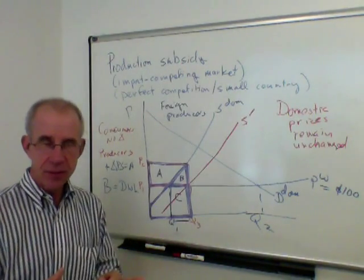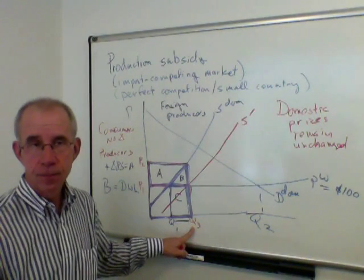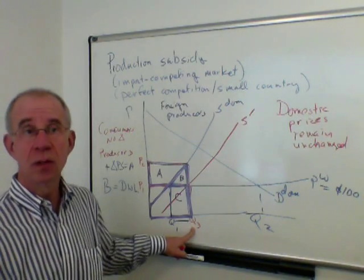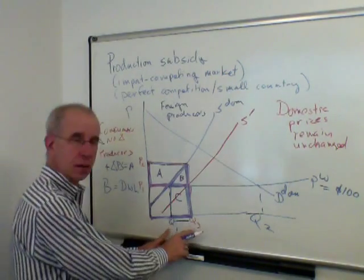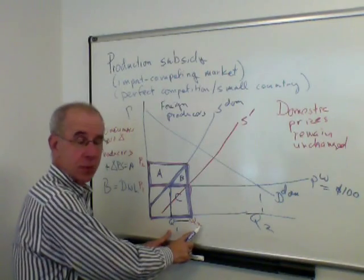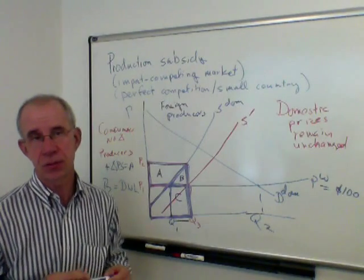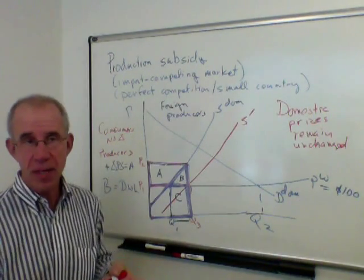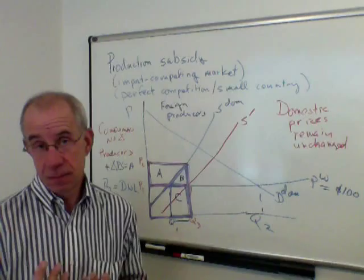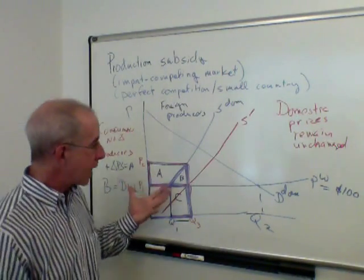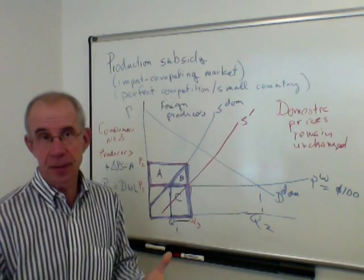Let me summarize: a domestic production subsidy can achieve an increase in domestic production just as a tariff would, just as a quota could, but at a lower cost. You don't increase the cost to domestic consumers in this market because the price doesn't change. Now, let's be clear: domestic production subsidies can be controversial. One aspect is that the government is clearly targeting and helping a particular industry.